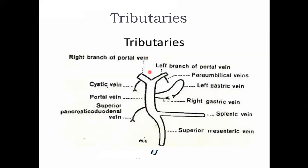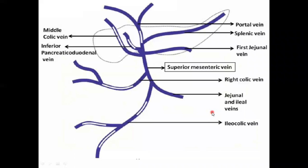Now the tributaries: the forming tributaries are the splenic vein and the superior mesenteric vein. Other tributaries include the superior pancreaticoduodenal vein, the right and left gastric veins (supplying the lesser curvature of the stomach), and the para-umbilical and cystic veins. The cystic vein drains into the right branch of the portal vein, while the para-umbilical vein drains into the left branch. The superior mesenteric vein receives the right colic vein, jejunal and ileal veins, and the ileocolic vein.